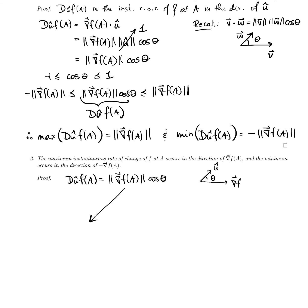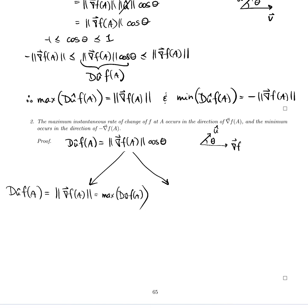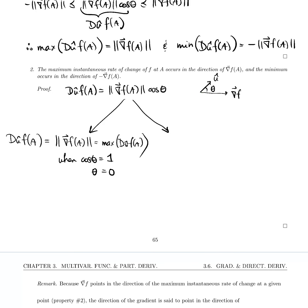We can examine this in two cases. The directional derivative will be equal to the norm of the gradient, which is the maximum value the directional derivative can take. It equals that maximum value when cos θ equals one. If cos θ equals one, then θ equals zero, and if the angle θ is zero, that tells us exactly that the vector u-hat points in the direction of the gradient.